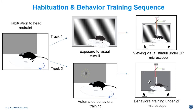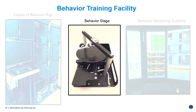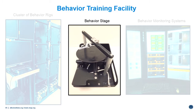Here is an overview of the behavior training facility. Each rig consists of six boxes, and we can train and habituate about 35 animals a day. We're going to add another cluster in 2016 to double our capacity. Inside each box is a custom behavior stage where the animal is head fixed in the same position it will be in across all platforms — ISI and OPHYS stages. Monitoring systems allow us to track the animal's performance, health, and behavioral scripts, with a webcam viewer to observe all animals throughout the training session.